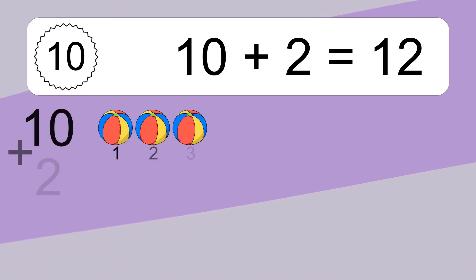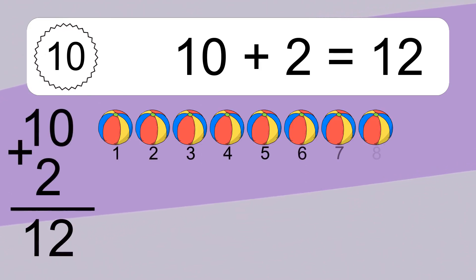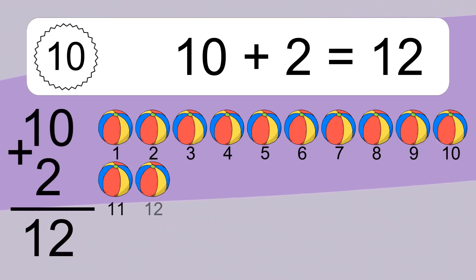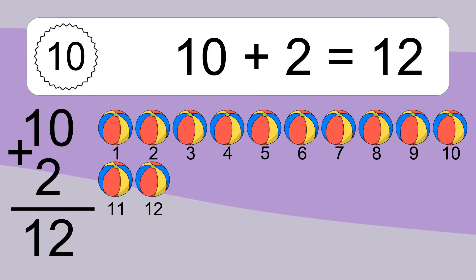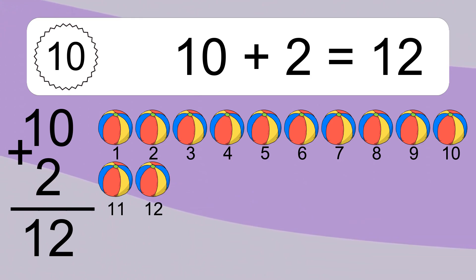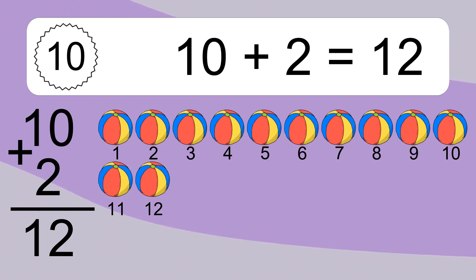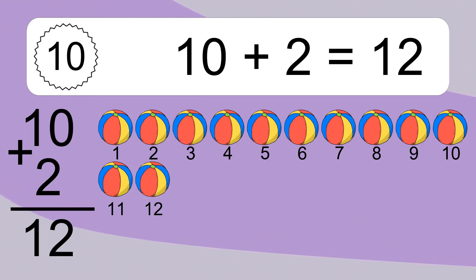10 plus 2 equals what? 10 plus 2 equals 12. Let's count it: 1, 2, 3, 4, 5, 6, 7, 8, 9, 10, 11, 12.